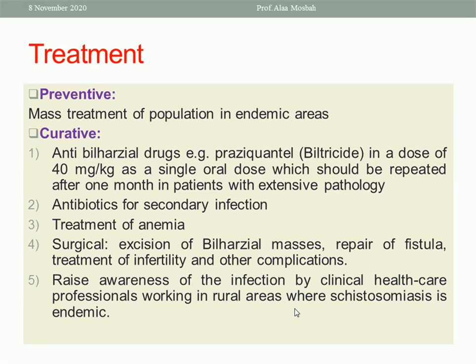We should give antibiotics if there is secondary infection, and we should treat anemia if it is associated. Surgical treatment includes excision of bilharzial mass or papilloma, repair of any fistula — whether vesicovaginal or rectovaginal — and treatment of infertility in case of pathology in the fallopian tubes. In case of adhesions, we can do adhesiolysis. If the tube is markedly damaged, we can do ICSI. We can also manage any other complication if present.